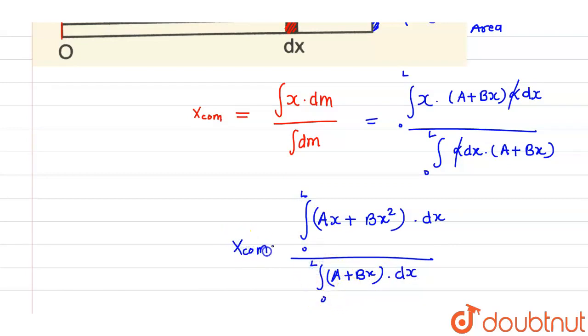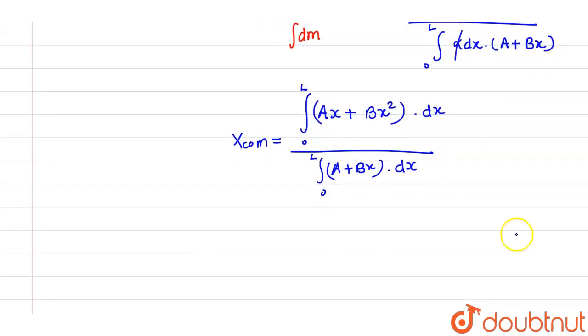Now further, if I calculate this integration, this will come out to be ax square by 2 or I can say al square by 2 after putting the limit plus bl cube by 3 divided by al plus bl square by 2.